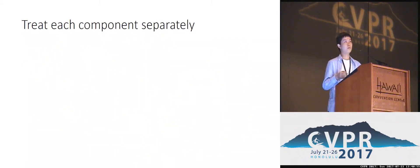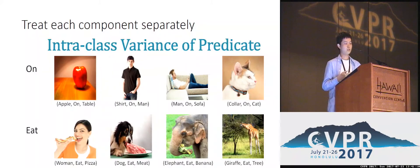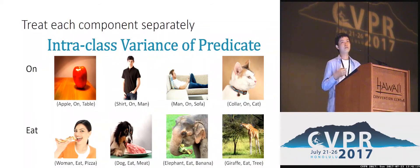Another approach is that we can treat each component separately — specifically, we can separately detect the subject, the object, and the predicate, and then group them together to get the triplet results. However, this approach has another issue, that is intra-class variance of predicates. As shown in this slide, the samples from predicates 'on' vary from case to case, depending heavily on the involved subject and object.